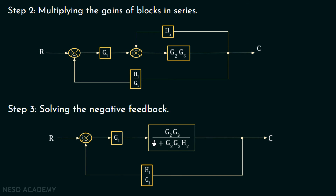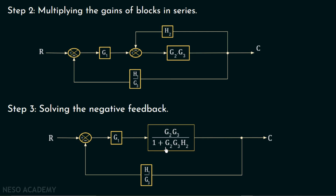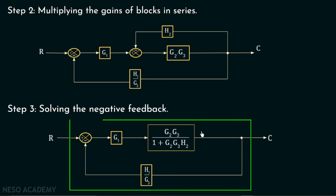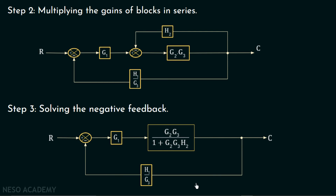We can now clearly see that these two blocks are in series. Multiplying their gains, the overall forward path gain is G1·G2·G3 over 1 plus G2·G3·H2. Observing the complete system, it is a negative feedback system, so we solve this outer negative feedback to calculate the overall transfer function. The forward path gain is G1·G2·G3 over 1 plus G2·G3·H2, and the feedback path gain is H1 over G3.